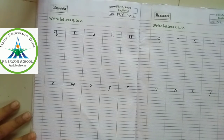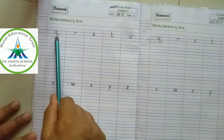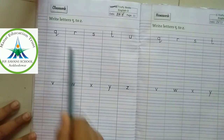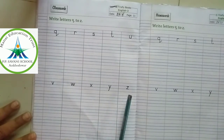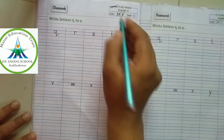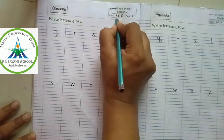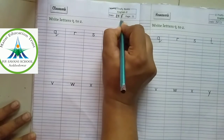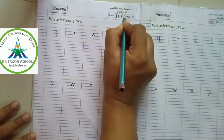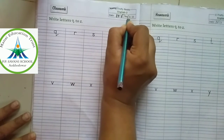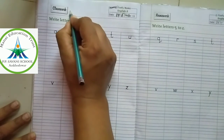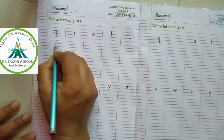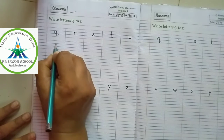Good morning students. Today we are going to write Q to Z. Today's date is 17 June. Classwork: write Q.